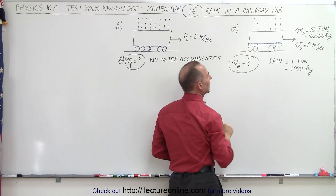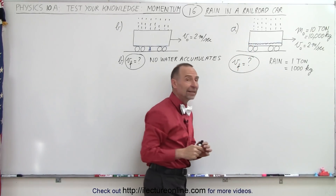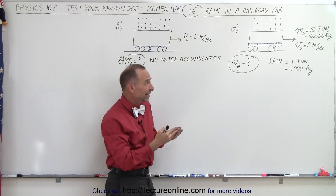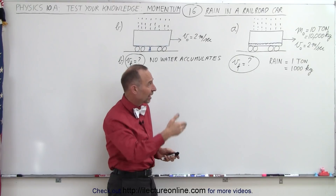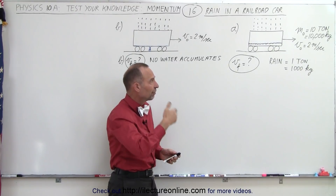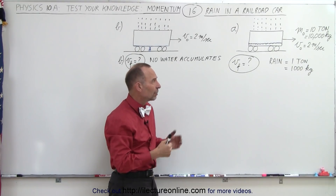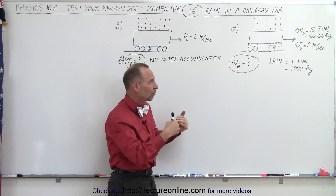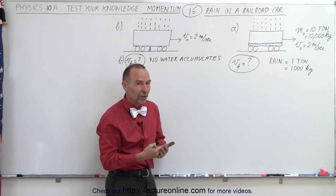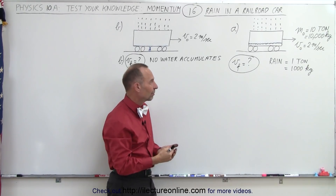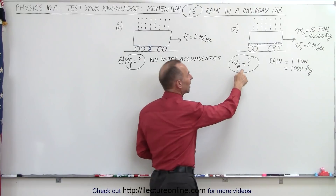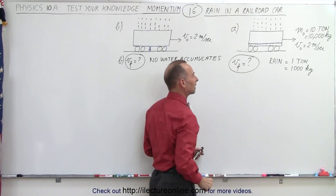While it's raining, the total mass of the car is 10 tons or 10,000 kilograms, and over a period of time the amount of rain entering the car is 1 ton — 1,000 kilograms of rain. What will be the final velocity in that case?